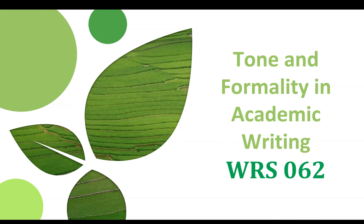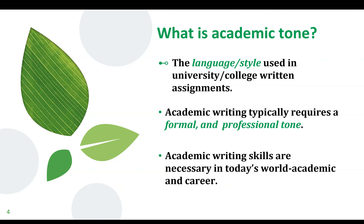Now, tone and formality in academic writing. The language in academic writing is often very different — it's very formal and professional. Academic writing is written for a specific audience, someone working in the professional world. For example, if you write a research paper in the field of education, your audience would be other lecturers or people in education who share the same knowledge and jargon. Jargons are specific words only known by those in specific fields. Academic writing is very targeted in that sense.